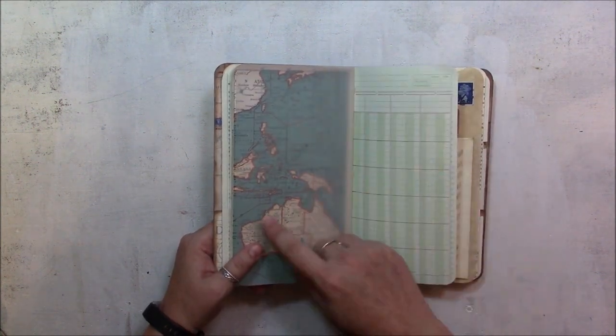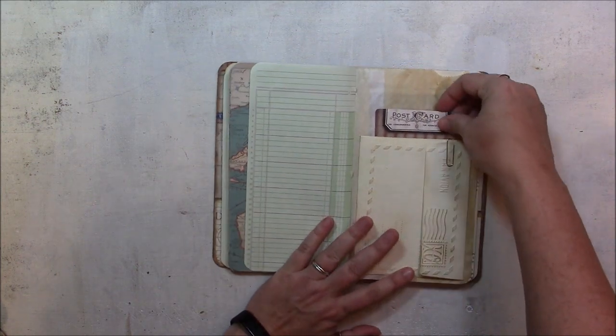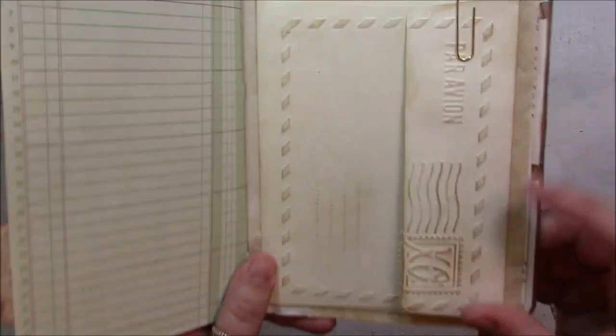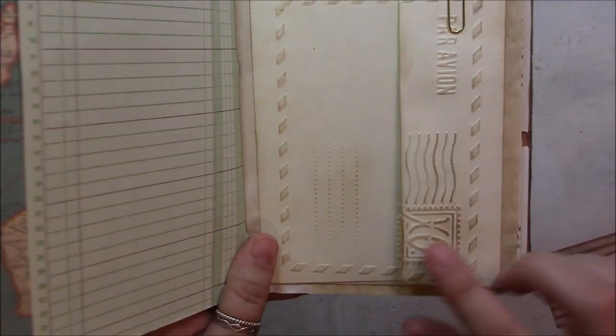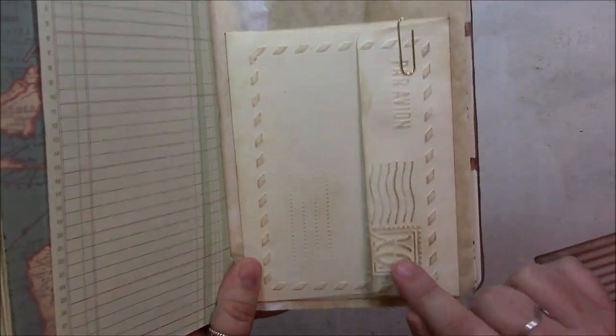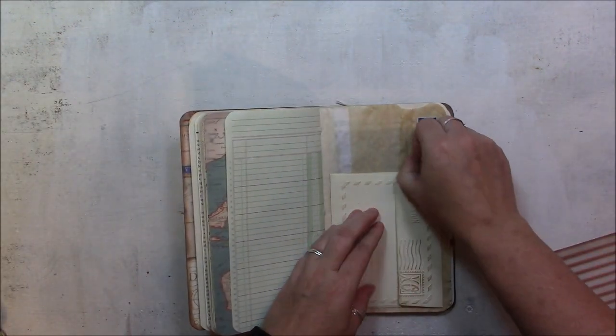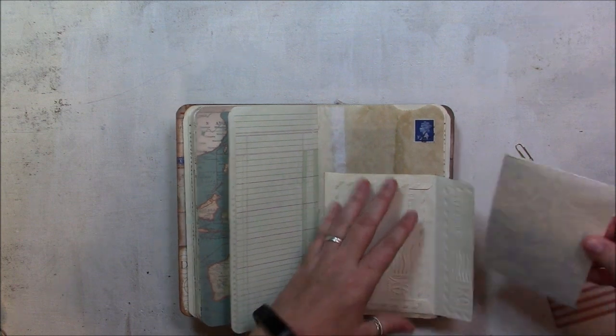I do have that book lying around here somewhere. Okay, so the same thing. This one's just a cream colored. It's the same embossing folder. And there's a little stamp there.